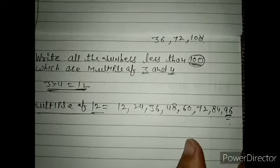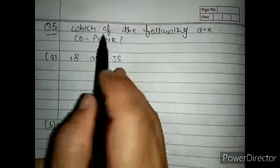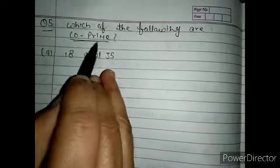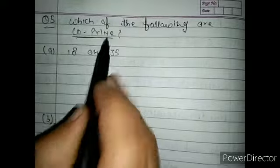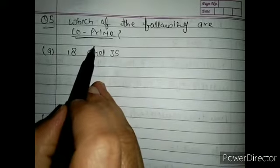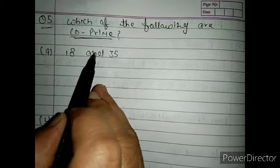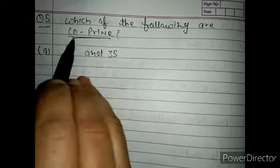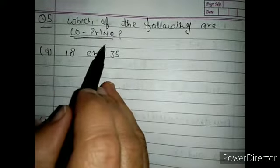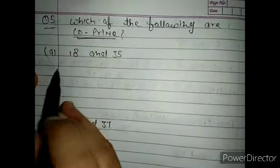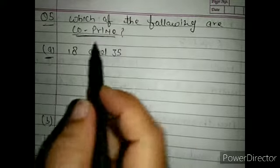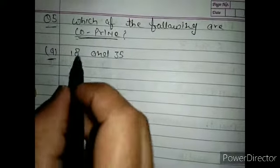Question number 5: which of the following are co-prime? Co-prime numbers are numbers whose only common factor is 1 — no common factor other than 1. We will define co-prime using the given questions.